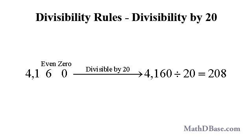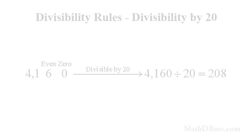In other words, if the last two digits of a whole number form a multiple of 20, the number is divisible by 20. For example, in 4,160, the 60 is a multiple of 20, so 4,160 is divisible by 20, and 4,160 divided by 20 equals 208.